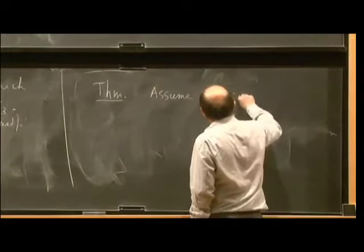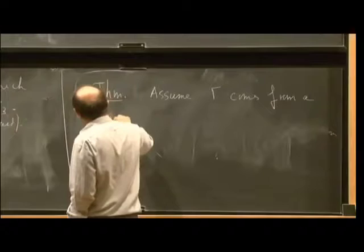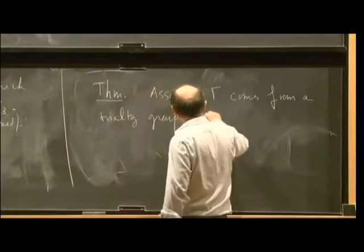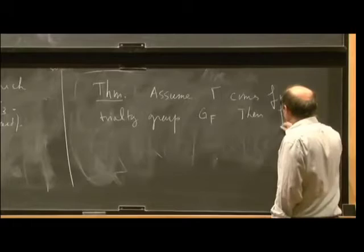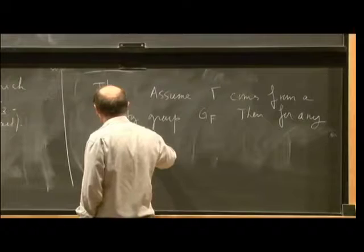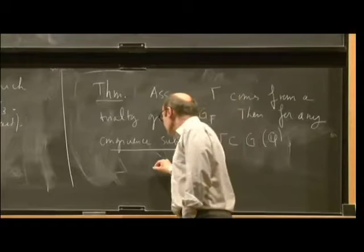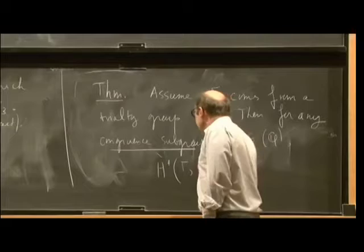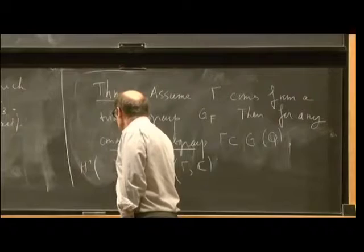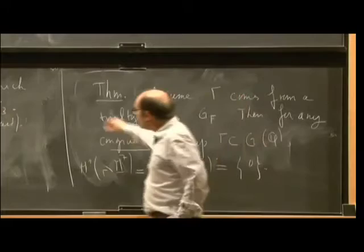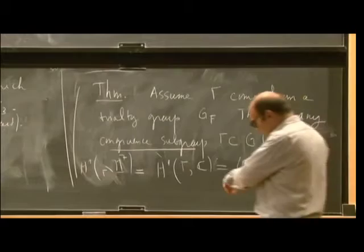So theorem, so we can go back to the general case, a similar situation over F, and assume that gamma comes from a triality group, GF, say, then for any congruence subgroup, gamma in G of Q, we have that the H1 or the Betti number of gamma C. If you prefer, of course, that's the H1 of the quotient. And this, in any case, this vanishes.